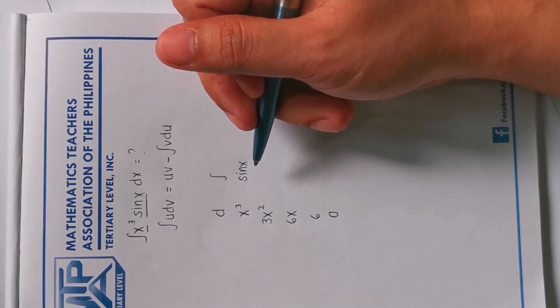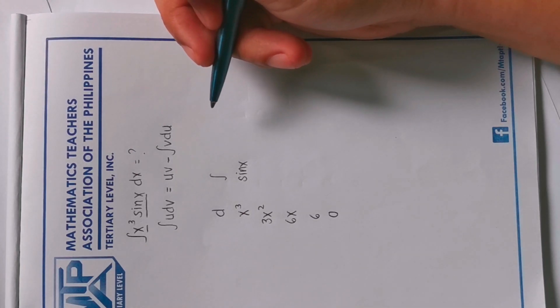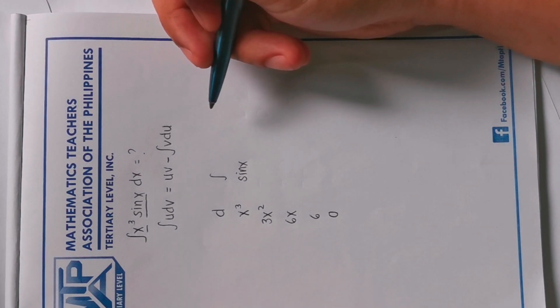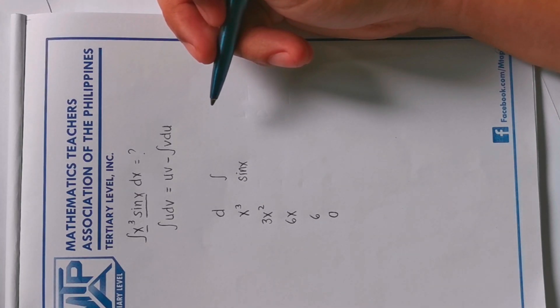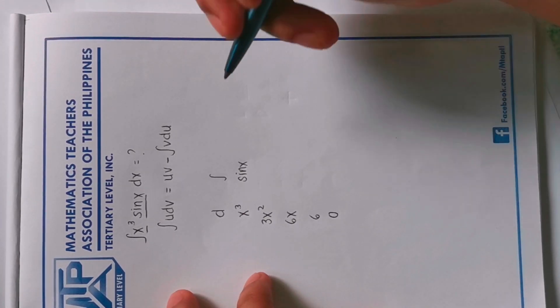Then we will now integrate sine x. So there's much confusion especially on the differential and integral of trigonometric functions involving sine and cosine, right. The differential of cosine is sine, and you will be mixing the signs, right. So in math, one wrong sign is one wrong answer.